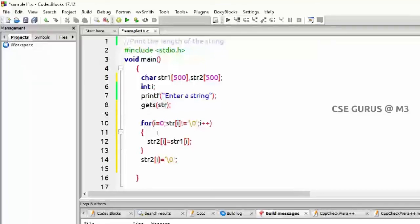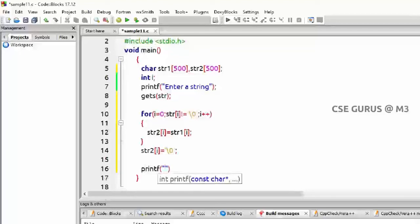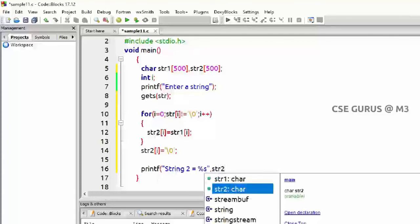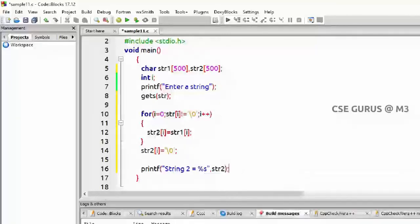This is what it will happen. We can see this execution part. Anyway, we have to print, so we are printing the string 2. String 2 is equals to, we will write percent s, which is used for format specifier for a string, comma str2. Simply we have to write like this. What is str2 initially? It is nothing, empty. Now you will get what is str of 1 will be in your str of 2.